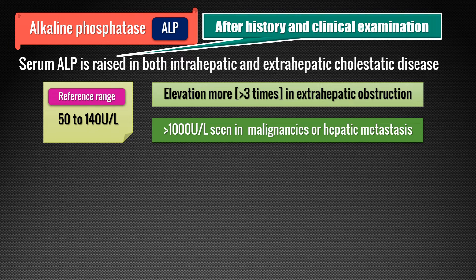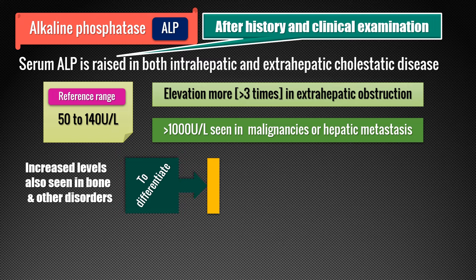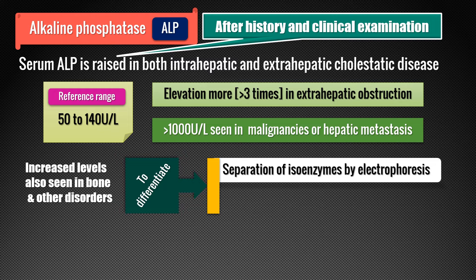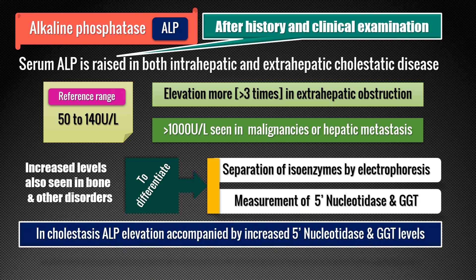As mentioned earlier, alkaline phosphatase is one enzyme with many isoenzymes, so it is expressed in various other tissues and organs. Increased levels are also seen in other disorders like bone disorders. We can differentiate the source of alkaline phosphatase elevation by separating these isoenzymes by electrophoresis, or by measuring 5'-nucleotidase and GGT alongside ALP, since these two are also markers for cholestasis and their elevation is always parallel with that of alkaline phosphatase. In this way, we can differentiate ALP elevation due to hepatobiliary disorders from other causes, mainly bone disorders.